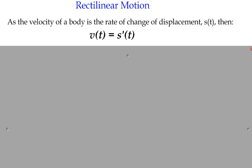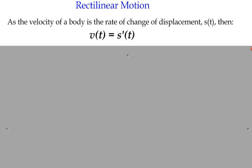In all of these things, we're going to be using the vector quantities. So displacement would normally be represented by the letter s, and the function of displacement would normally be s of t, t being time, and all of our motion functions are really going to be dependent on that variable t. So we've got displacement function s of t.